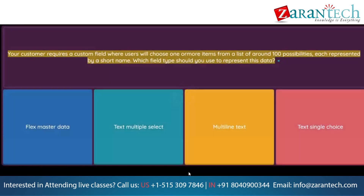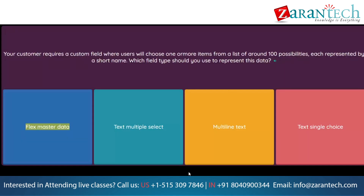Question: Your customer requires a custom field where users will choose one or more items from a list of around 100 possibilities, each represented by a short name. Which field type should you use to represent this data? Option 1: Flex master data. Option 2: Text multiple select. Option 3: Multiline text. Option 4: Text single choice.